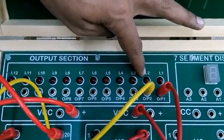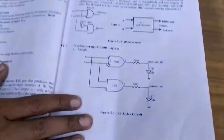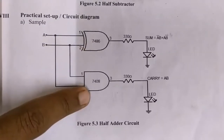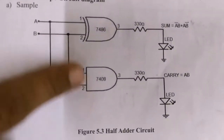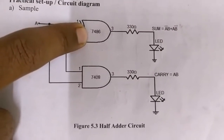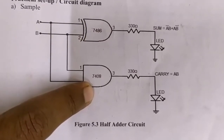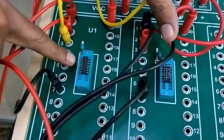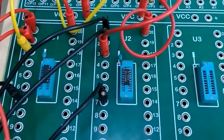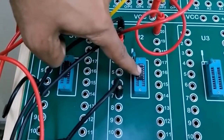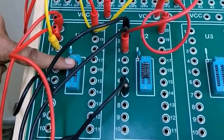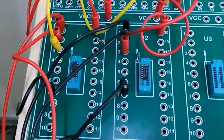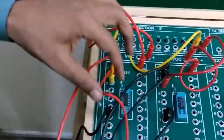Now let us move to the actual circuit diagram. IC 7486, which is the XOR gate, is used to generate or calculate the sum, while IC 7408, which is the AND gate, is used to find out the carry. As you can see in the diagram, 7486 is a two-input XOR gate and 7408 is a two-input AND gate. Inside each IC, four different gates are present, but for our experiment we will require only a single gate.